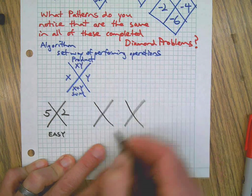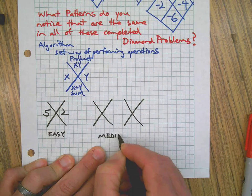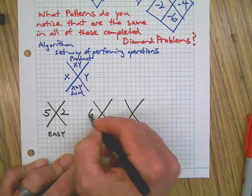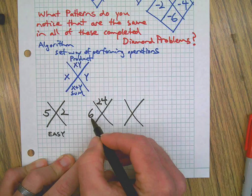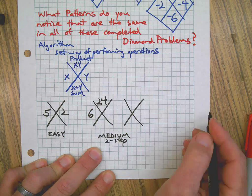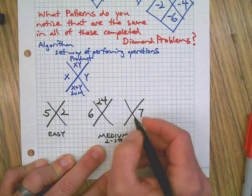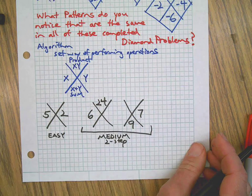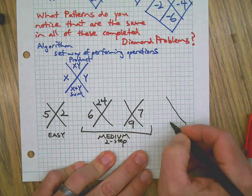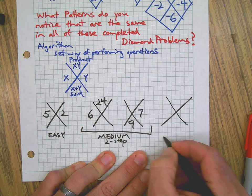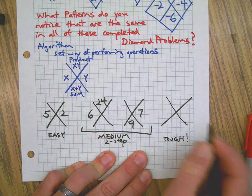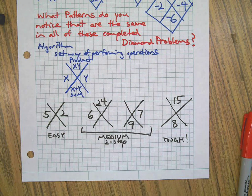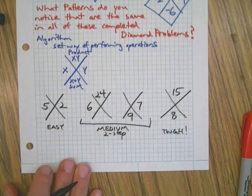Then we have a couple of ways we can get what I call the medium ones. They're the two-step problems. That might look something like this where you have one of the side numbers, in this case we have the X and we have the product, or you might have one of the side numbers and the sum at the bottom. So that fits into that category of those two-step problems. And finally, this would be the most challenging type of diamond problem, this is your tough one. And that's where you're given the product and the sum, but not the basic factors or addends there.